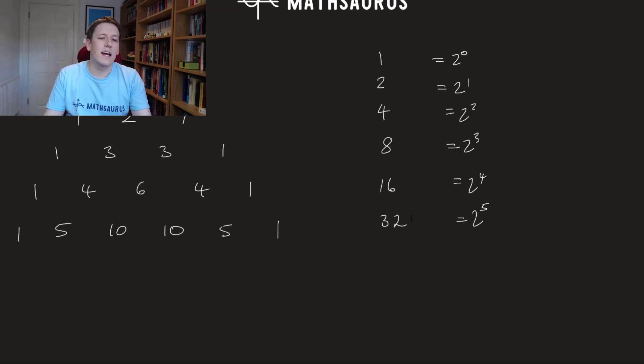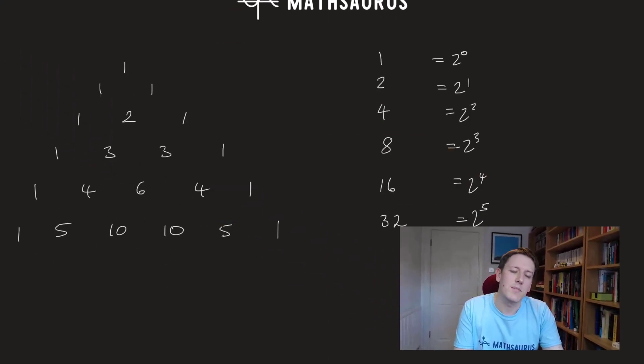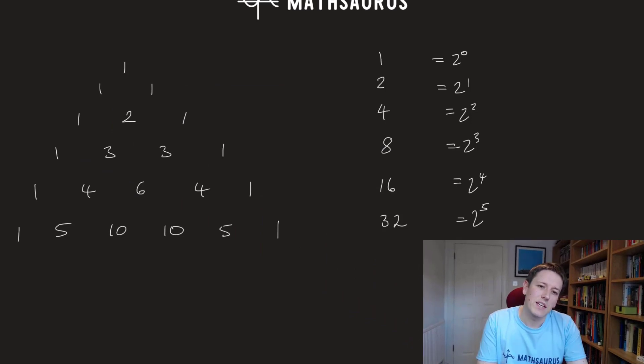But why is this true? Actually, when you think about it, it's not too hard to explain. Let's think about how we make this row 1, 3, 3, 1. The 1 comes from this 1 here, and the 3 comes from the 1 and the 2 added together. And then this 3 comes from this 2 and this 1 added together, and I've got this 1 here which is just the same as this 1. So you can see that, effectively, if I think about this 3 as 1 plus 2, and this 3 as 2 plus 1, then this row 1, 2, 1 is appearing